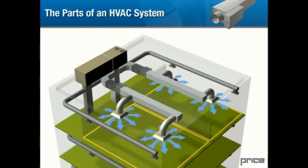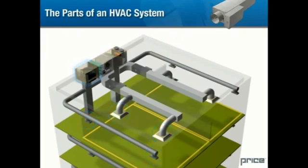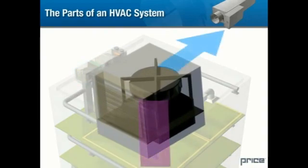Once air enters a space, where does it go? Air circulates through the return inlets and returns to the air handling unit. Unlike an air outlet, a return requires no sophisticated vanes. However, the relative location of the air inlets and outlets can be critical to the efficiency of the system. Upon returning to the air handler, a certain portion of the return air is exhausted and replaced with fresh exterior air — approximately 10 to 20 percent in an average office building or commercial space.